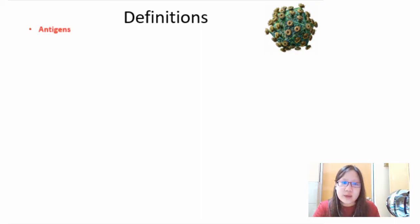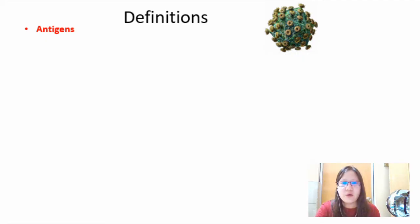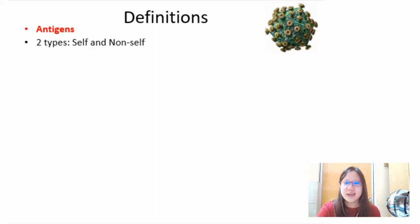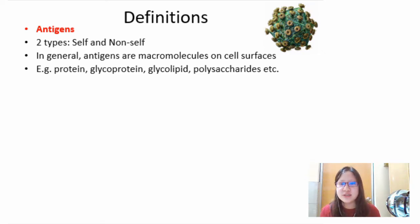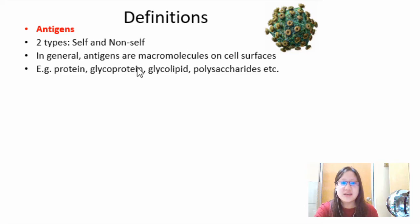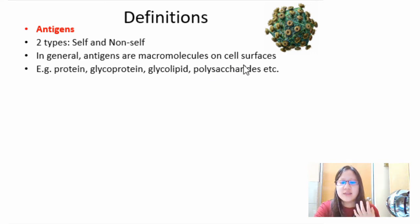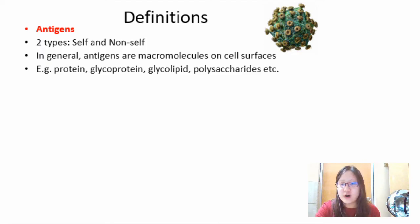One word that will keep coming up as we go along is the word 'antigens.' There are two types: self and non-self. You may have heard these terms in Chapter 4, where we talked about how proteins and glycolipids can act as cell surface antigens — they are macromolecules on the cell surface that carry the identity of the cell.